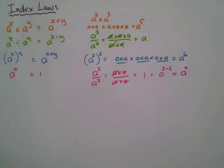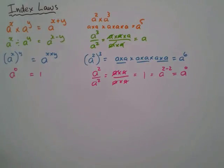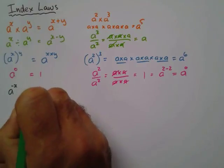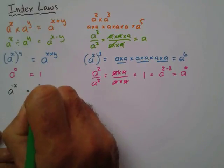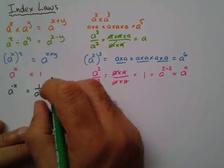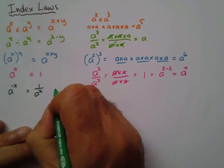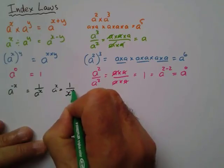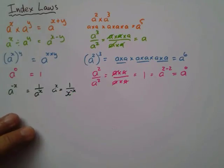Our fifth rule is a to the power negative x. That is the same as 1 over a to the power x. Another way of writing that is to say a to the power x equals 1 over a to the power negative x.